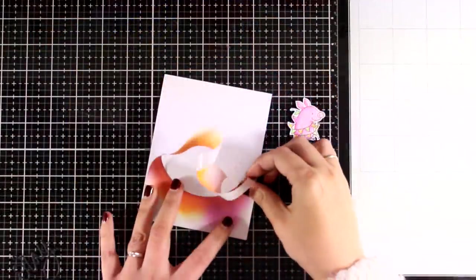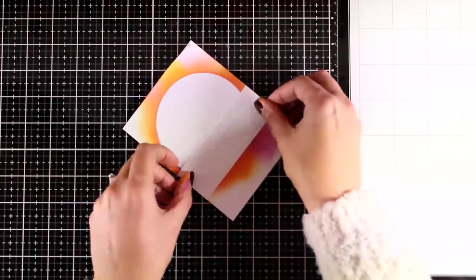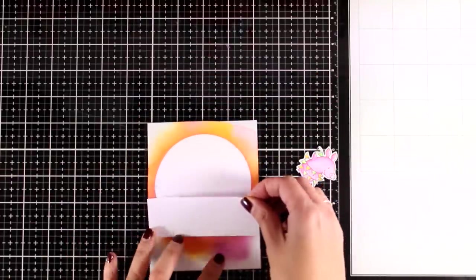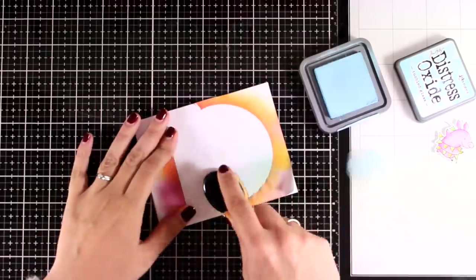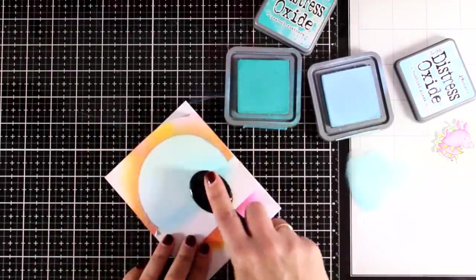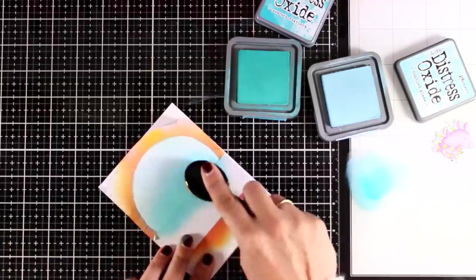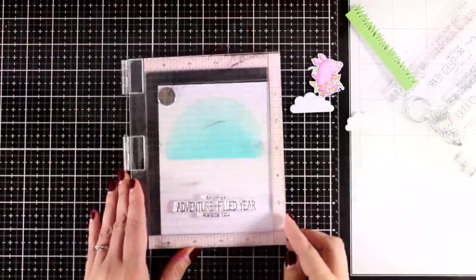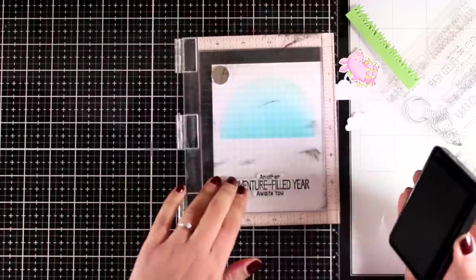Moving on to the third birthday card for today, again I'm using the same mask, but this time at the bottom I'm going to stick another piece of tape so that I can create kind of a ground. Now for another color combination, this time I'm starting with tumbled glass. I'm going to cover up completely the whole area, and on top I'm going with a darker shade of blue, which is peacock feathers. Love the smooth blending with those brushes. Now I'm going to peel off all the masking tapes. I'm using black ink to stamp the sentiment at the bottom. Again, the sentiment comes from the same stamp set.